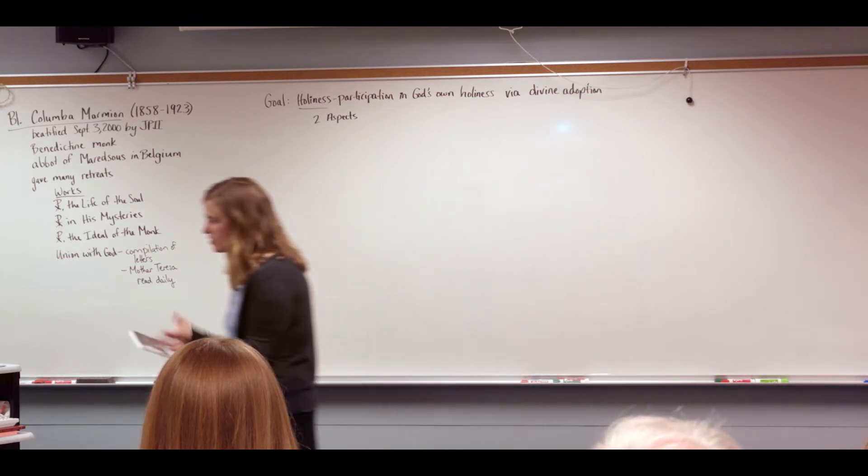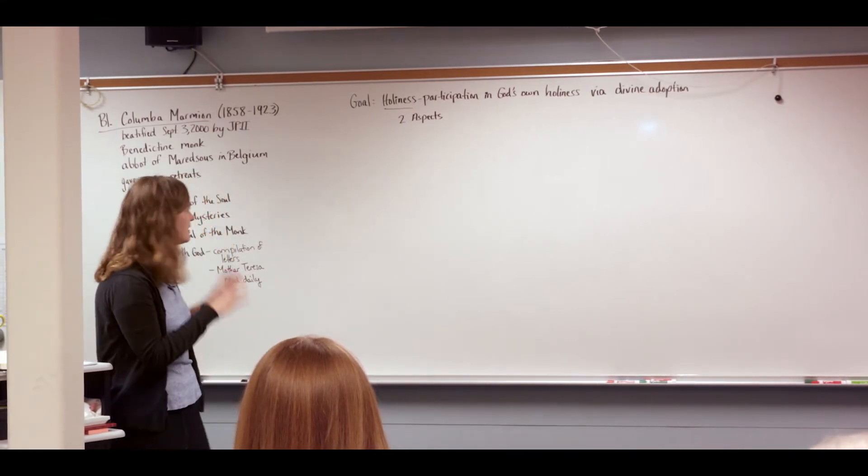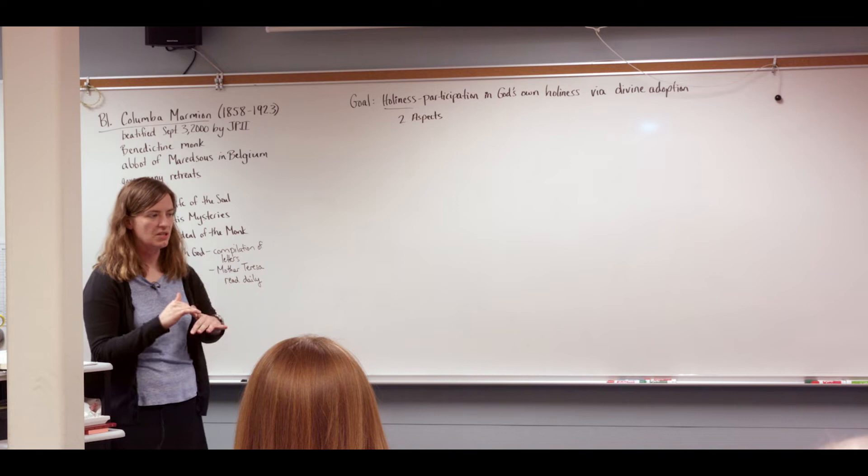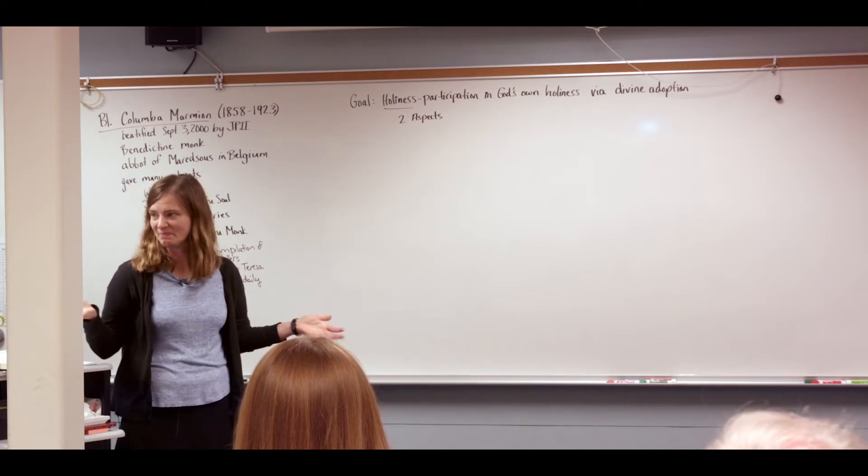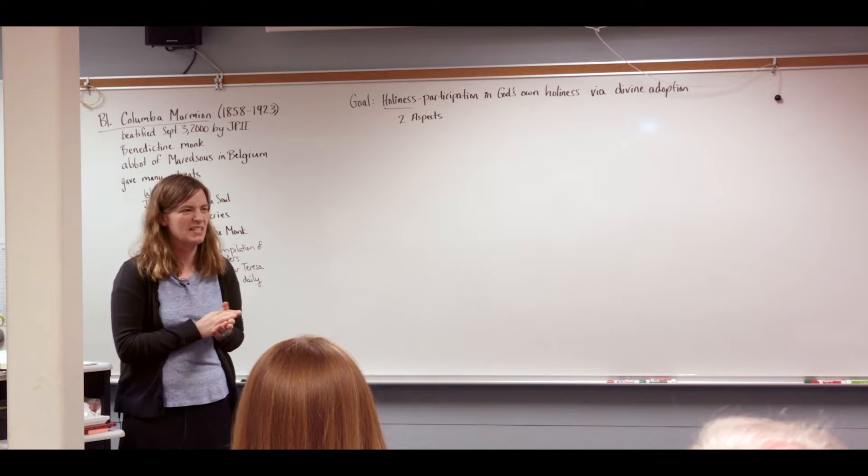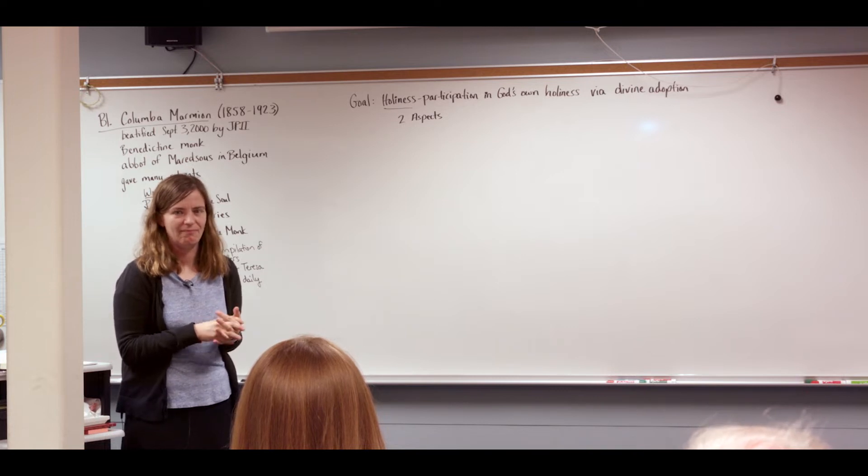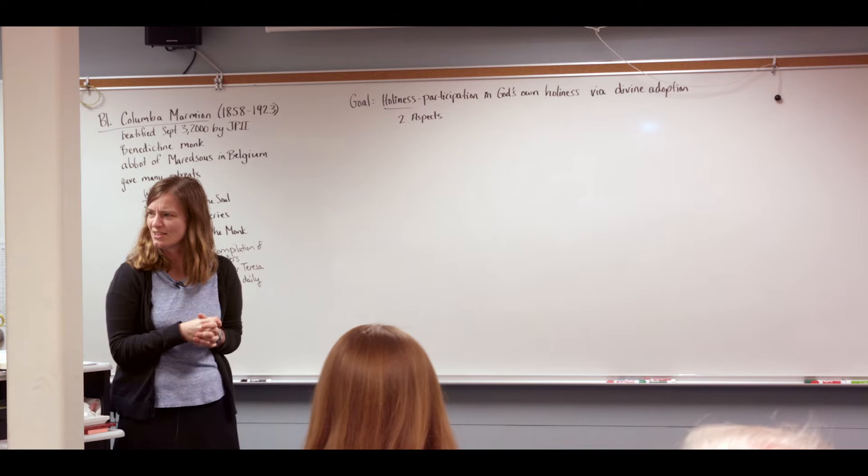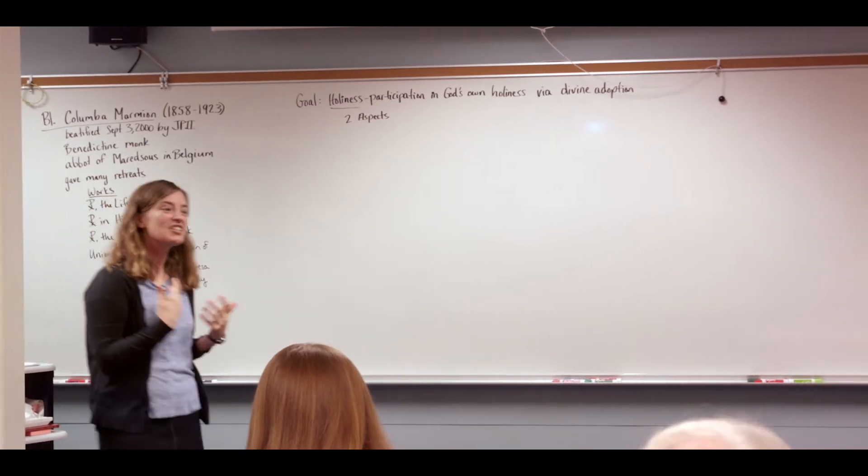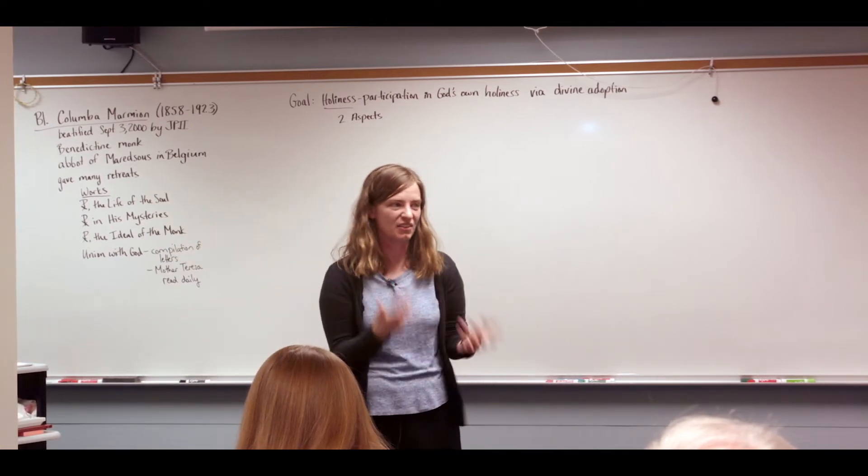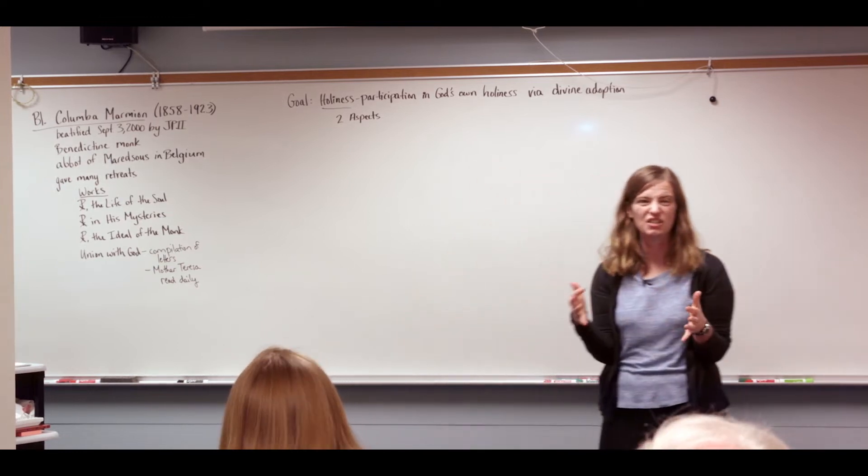All right, so just kind of, we'll do a little bit of background on Columba Marmion's basic thought, and then we'll go into the book. So the goal of the spiritual life is holiness. What would you say holiness is? Perfection of charity. Excellent. Sounds like you've read Lumen Gentium. He said the perfection of charity, right? So the fullness of charity, of the love of God and the love of neighbor. Okay, so how do we get there? How do we get to that perfection of love?